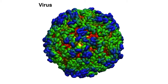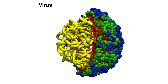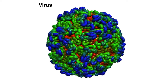A virus capsid is a container made out of proteins, shown in blue, green, and red, to protect its cargo from the harsh extracellular environment. The cargo in this virus is RNA, represented in thick yellow wires. What you're seeing right here is satellite tobacco mosaic virus.